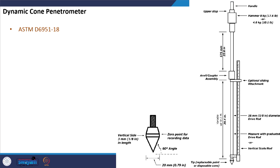The standard method for dynamic cone penetrometer test is ASTM D 6951. The dynamic cone penetrometer test is usually adopted for testing in-situ soil. Let us say you have already constructed a pavement and after few months or few years you are going to visit that pavement to analyze the in-situ properties.